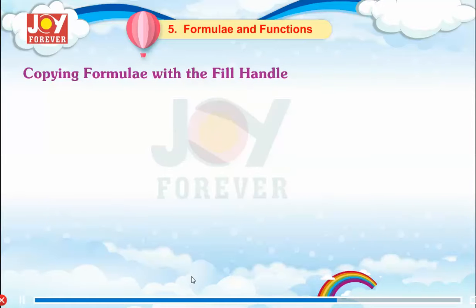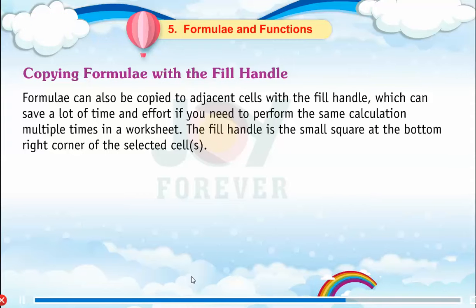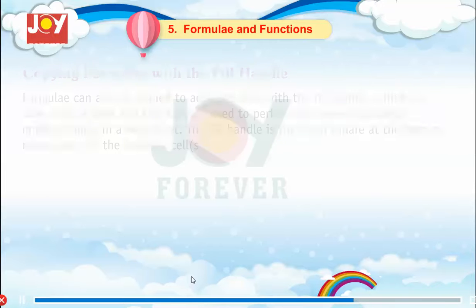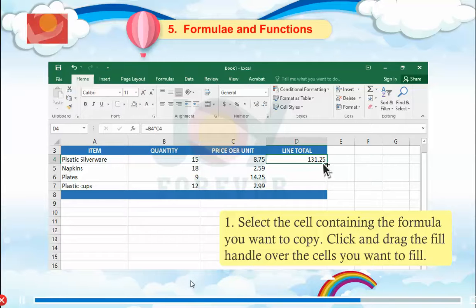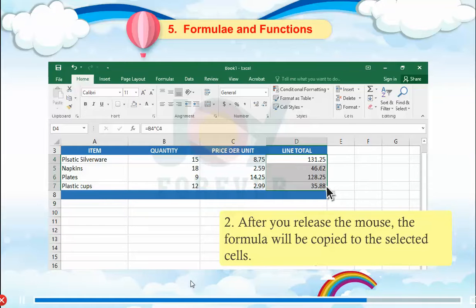Copying Formulae with the Fill Handle. Formulae can also be copied to adjacent cells with the fill handle, which can save a lot of time and effort if you need to perform the same calculation multiple times in a worksheet. The fill handle is a small square at the bottom right corner of the selected cell. Select the cell containing the formula you want to copy, then click and drag the fill handle over the cells you want to fill. After you release the mouse, the formula will be copied to the selected cells.